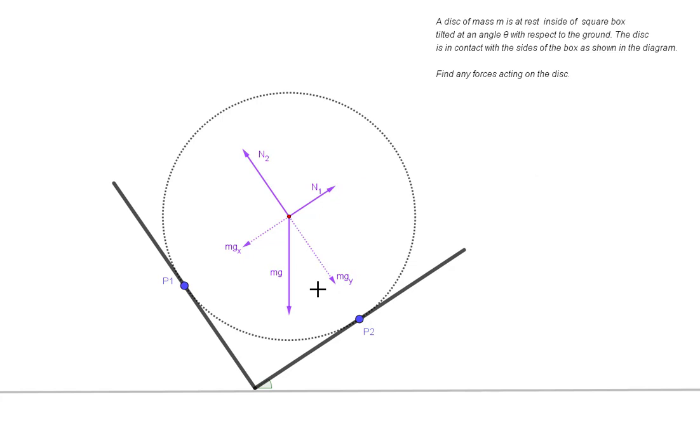We have one component in this direction and one component in this direction. And actually let me also remove this vector. So again, when you add these two vectors, you get the original gravity vector.